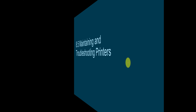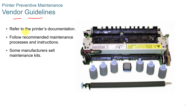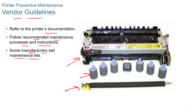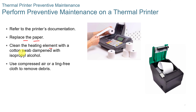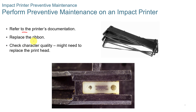Maintaining and troubleshooting printers. Follow the vendor guidelines for maintaining printers, refer to the documentation that comes with the printer or seek it online, and follow recommended maintenance processes. Some manufacturers sell maintenance kits — the rollers can be changed yourself, and they do get worn out over time. If you start having problems with the printer, you might need to replace the paper, clean the heating element with a cotton swab dampened with rubbing alcohol — don't put the alcohol directly on the rollers. You can also use compressed air. On impact printers, you can replace the ribbon, check character quality, or replace the print head.